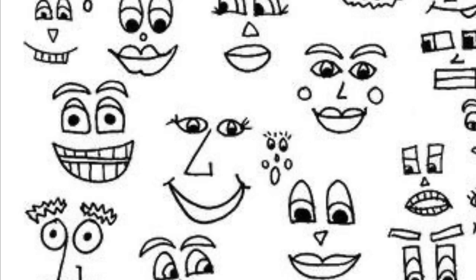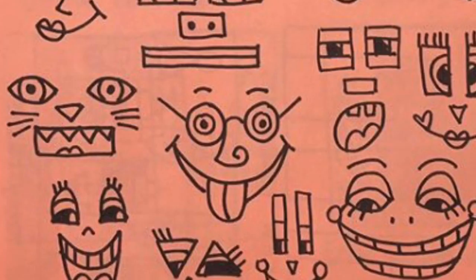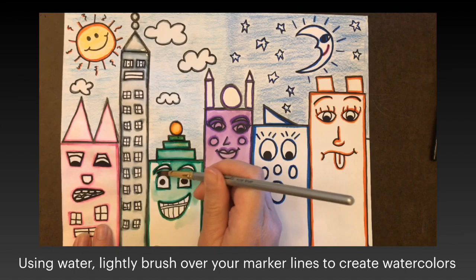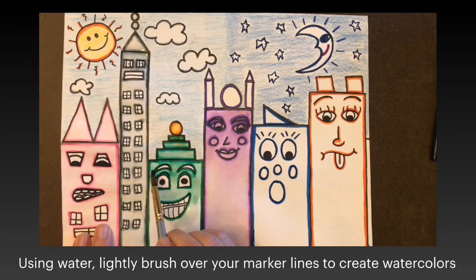Go over all your pencil lines with a marker or pen and then add color in any way that you like. One popular way is to outline with marker and then go over it with a paintbrush and water, creating your own watercolor paints. Don't forget to clean your brush really well between colors so you don't get any unnecessary mixing.